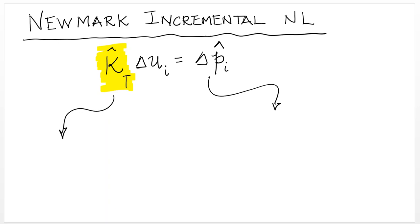So the generalized load and the generalized stiffness are these. Delta P hat I is the increment in load at step I plus terms that have to do with the velocity at I and the acceleration at I.